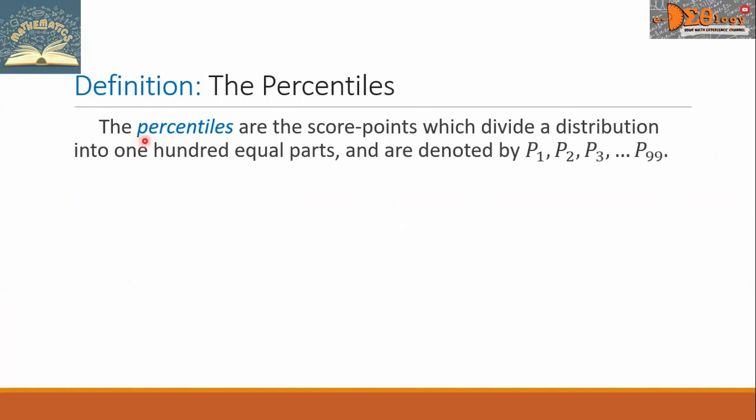Let us define the percentiles. The percentiles are the score points which divide a distribution into 100 equal parts and are denoted by P1 for 1st percentile, P2 for 2nd percentile, P3 for 3rd percentile, up to P sub 99 for the 99th percentile.